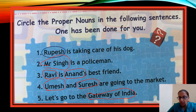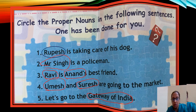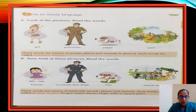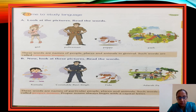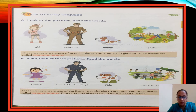Now let's have a look at the exercise in your Tamarind Tree book. First let's read Part A: look at the pictures and read the words — girl, policeman, puppy, park. What are these? Common nouns. These words are names of people, places and animals in general. No particular park, no particular puppy, no particular policeman is specified, so these are common nouns.